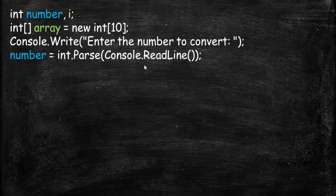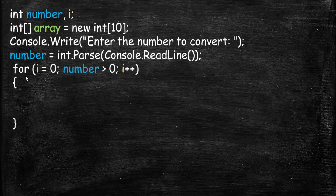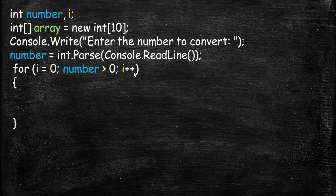Whatever the user has entered, we convert it to integer and store it in the number variable. This is our first for loop. We start with i equal to 0, and the condition is that the number should be greater than 0. Each time the loop runs, it increments i and checks the condition that the number is greater than 0.